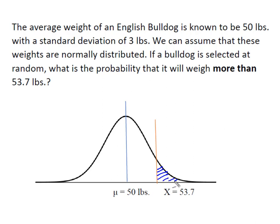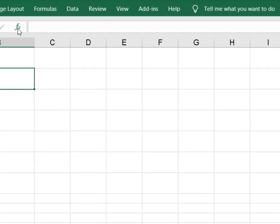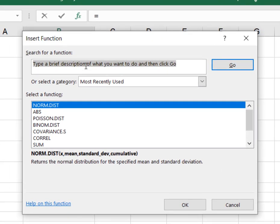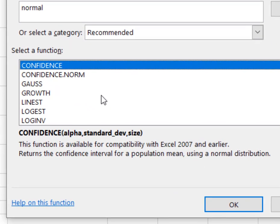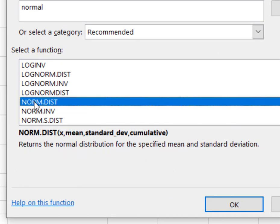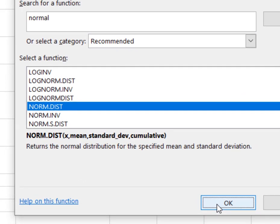So we're going to use Excel to find that probability. I'm going to come up here to my insert function and in your search you're just going to type normal and then hit go. What you're going to do is you want to scroll down and you want to find this norm dist, N-O-R-M dot D-I-S-T and hit OK.